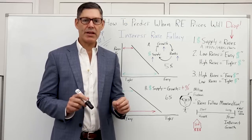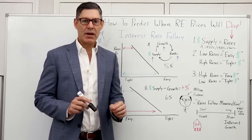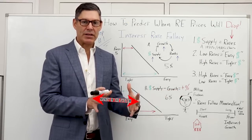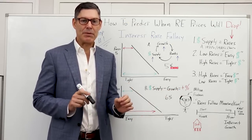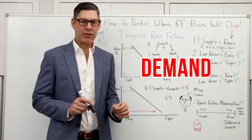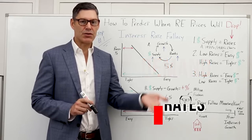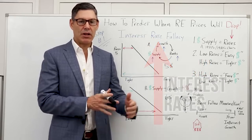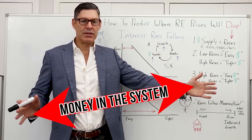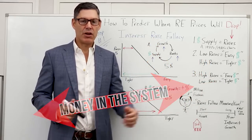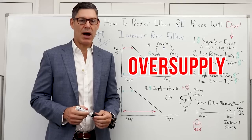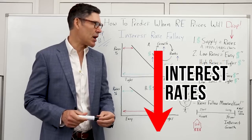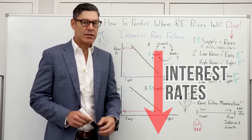The idea is that if you have very little money in the system, there will be a lot of demand for money, so interest rates will go up. And if you have a lot of money in the system — an oversupply — interest rates will go down.